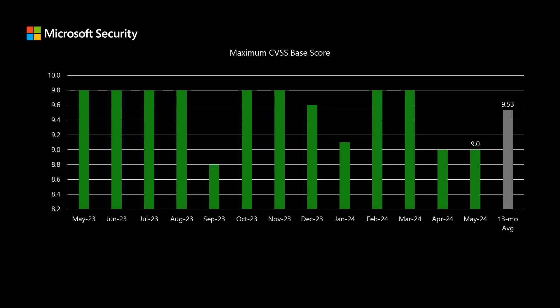I'll talk about scoring, where Microsoft uses an industry standard methodology for rating different vulnerabilities. It's called the Common Vulnerability Scoring System, or CVSS. It's a scale between 1 and 10, where 10 represents the most risk. This month, the highest rated CVSS score in this set is 9.0 on that scale of 10, which is a little bit lower than what we've been seeing on average over the past year.